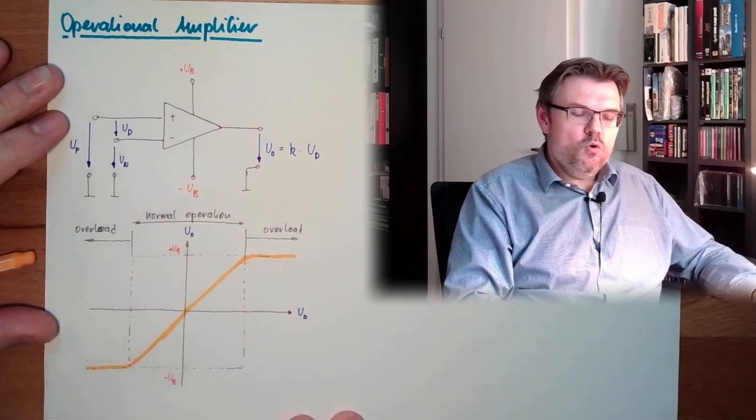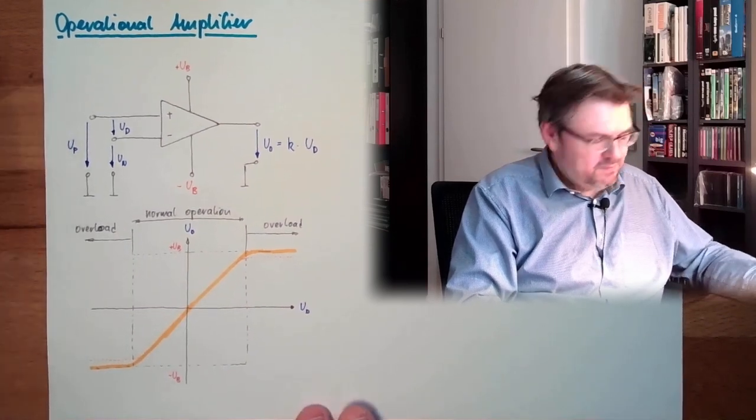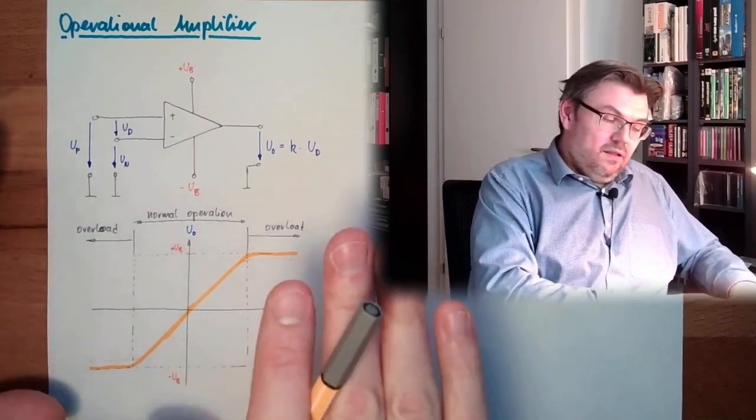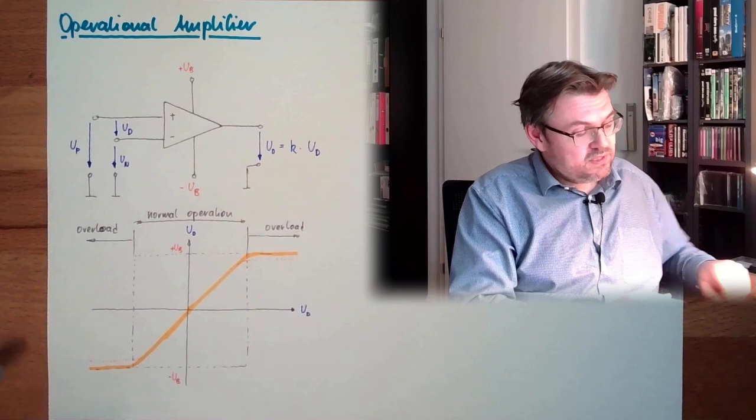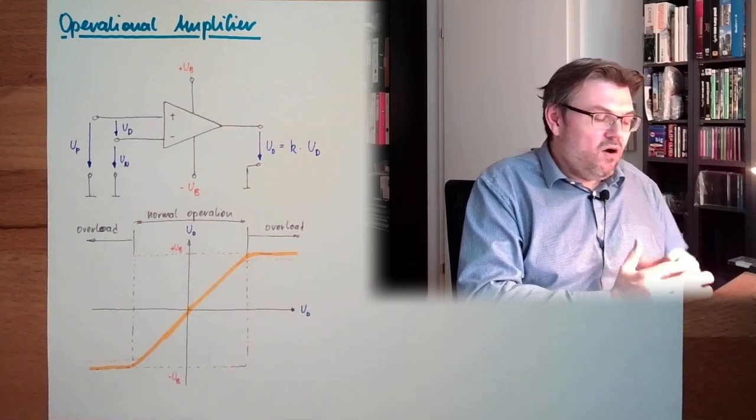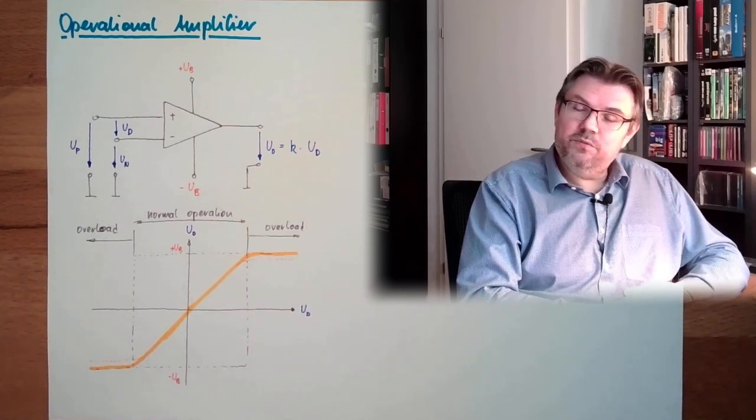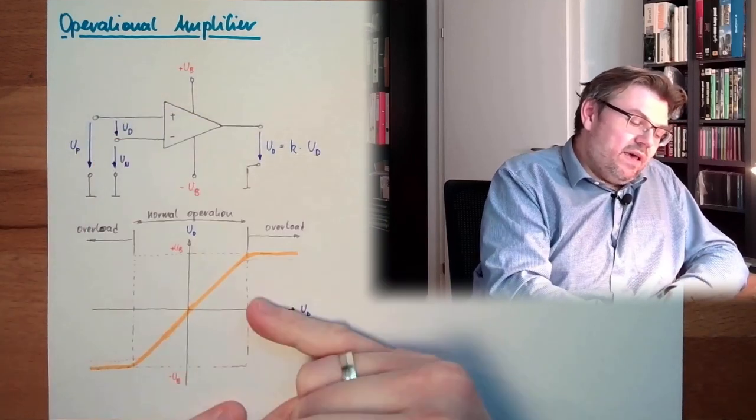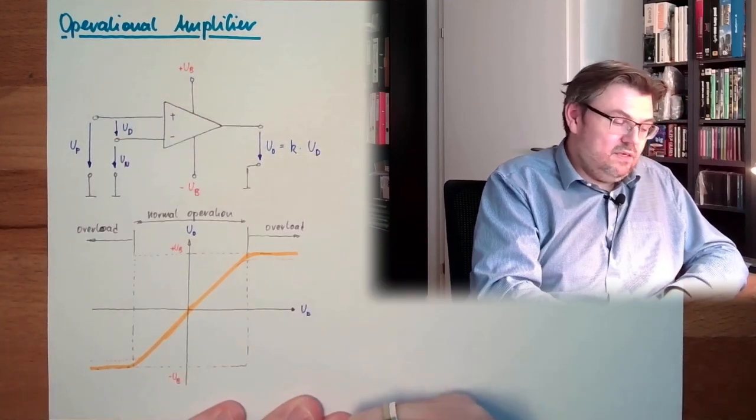What is with this K? We will see, because this K should be as high as possible, but that's already very specific. This is how an operational amplifier is working. Take the differential voltage, make a gain out of it, and that's it.